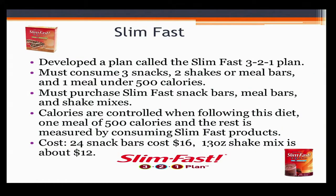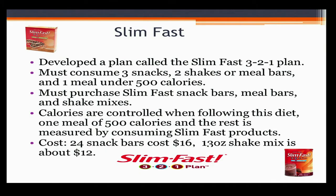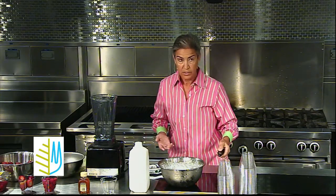Slim Fast has a 3-2-1 plan: three snacks, two shakes, and one meal under 500 calories. Now, 500 calories is about what's in a kids' happy meal — a cheeseburger, fries, and a Coke. You're supposed to have 500 calories in the evening, and during the day eat tiny snacks and drink shakes. That makes absolutely no sense, but every time you buy these things, somebody is making money.